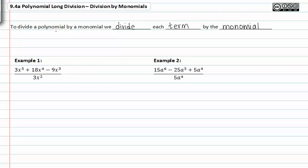What this means is in example one, we take each term in the numerator and divide it by three x squared, or the monomial in the denominator.